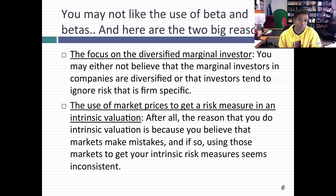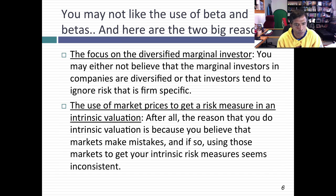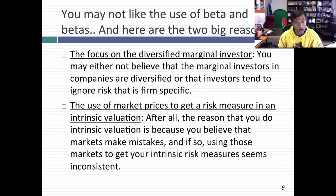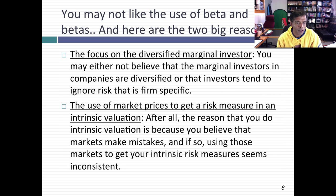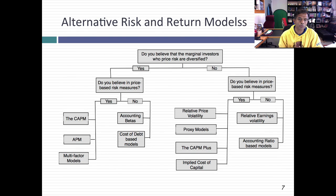You could tell me that you don't like the focus on the diversified investor — that the investors pricing stocks are not diversified, and therefore you should be bringing in some of the risk you can eliminate through diversification. Or maybe your beef is that we use past prices to come up with risk measures like beta. If you can tell me what you don't like about modern portfolio theory, I'm going to argue that I can come up with a way of estimating risk, because traditional discounted cash flow valuation does not require that you use beta to come up with your costs of equity and capital.